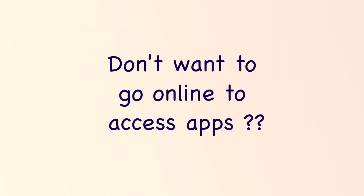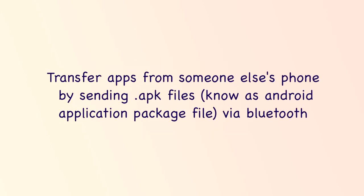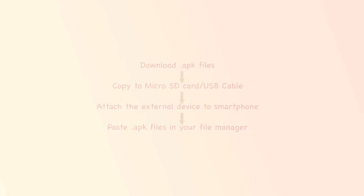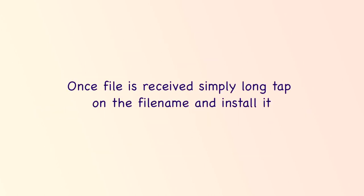If you don't want to or are unable to go online to access apps, you can transfer apps from someone else's phone by sending .apk files, also known as Android application package files, via Bluetooth. Alternatively, you could download the .apk file to your device's microSD card or use a USB cable to move it from a PC. When you have received the file, simply long-tap on the file name and you will be prompted to install it.